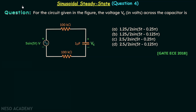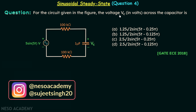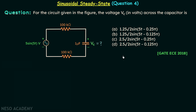In this presentation we are going to solve question number 4. According to the question, for the circuit given in the figure, the voltage VC in volts across the capacitor is to be found. This is the circuit and we are required to find VC, which is the voltage across this one micro farad capacitor. There are four options given and we are required to choose one correct option. This question is taken from GATE EC 2018 paper. I want you to pause this video and try to solve this question on your own.